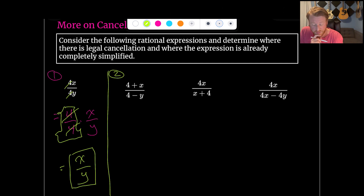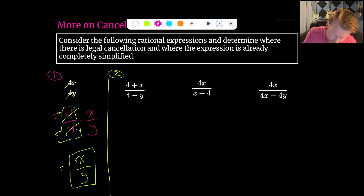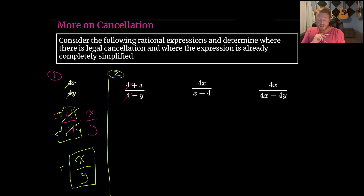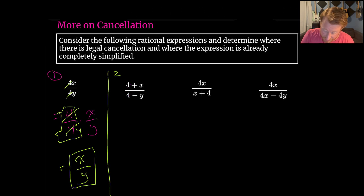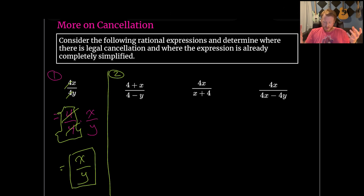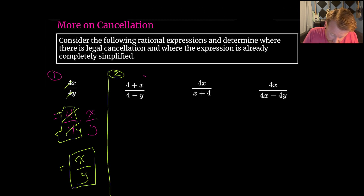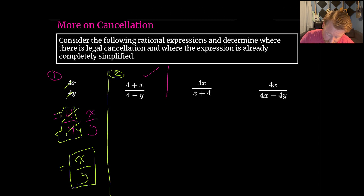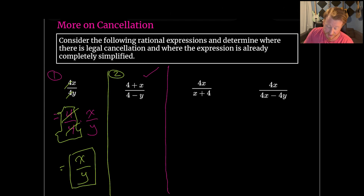The second one: (4 + x) over (4 − y). The danger is that a lot of students would love to just cancel those 4s. But that is not valid because those 4s aren't being multiplied by anything — the top one is being added to x, and in the denominator we're subtracting y. There is no multiplicative one, so this is completely simplified.